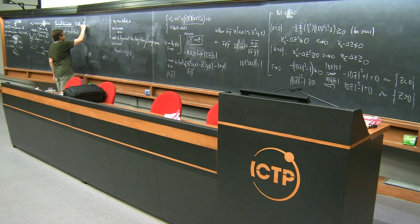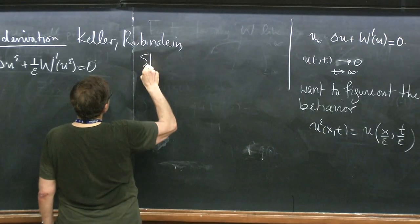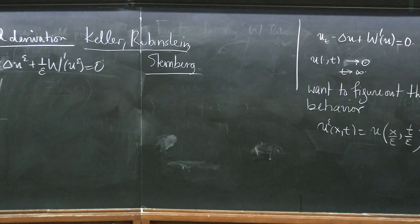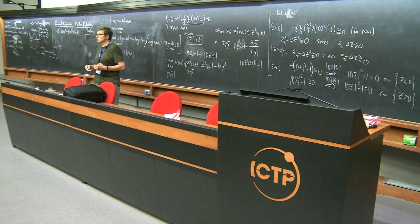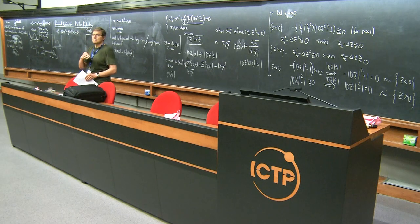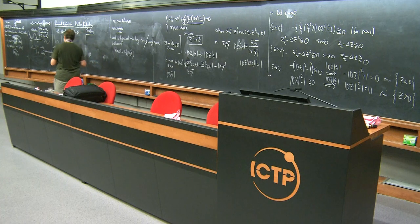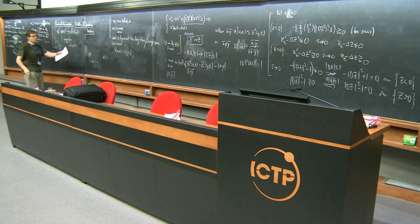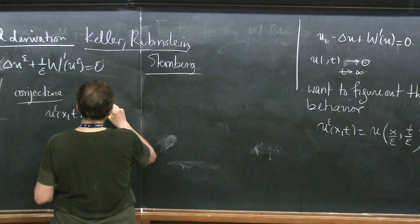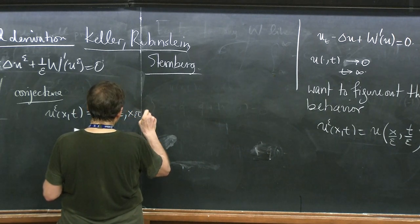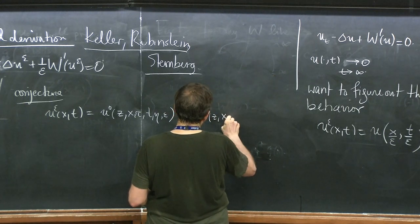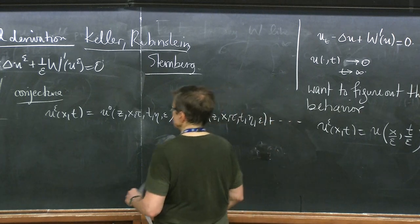So what Keller, Rubinstein, Sternberg did — I highly recommend this paper to students, it's a beautiful applied math paper with nothing rigorous, but that's how you learn to do formal asymptotics. They make the conjecture that they can write the solution, which depends on epsilon, as an asymptotic expansion. The first term they call u₀(x, z, tau, t, eta). There will be a next term in the expansion.